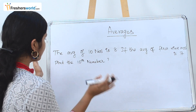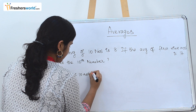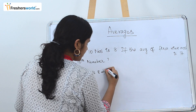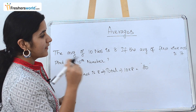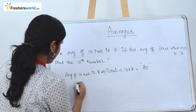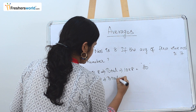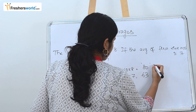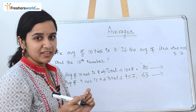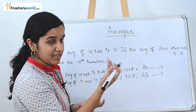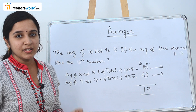As usual, let's split the question. First, the average of 10 numbers is 8, so the total value is 10 into 8, which is 80. Second, the average of the first 9 numbers is 7, so the total value is 9 into 7, which is 63. The first set has 10 numbers, the second has 9 numbers. So subtracting — 80 minus 63 — gives us 17. The tenth number is 17.